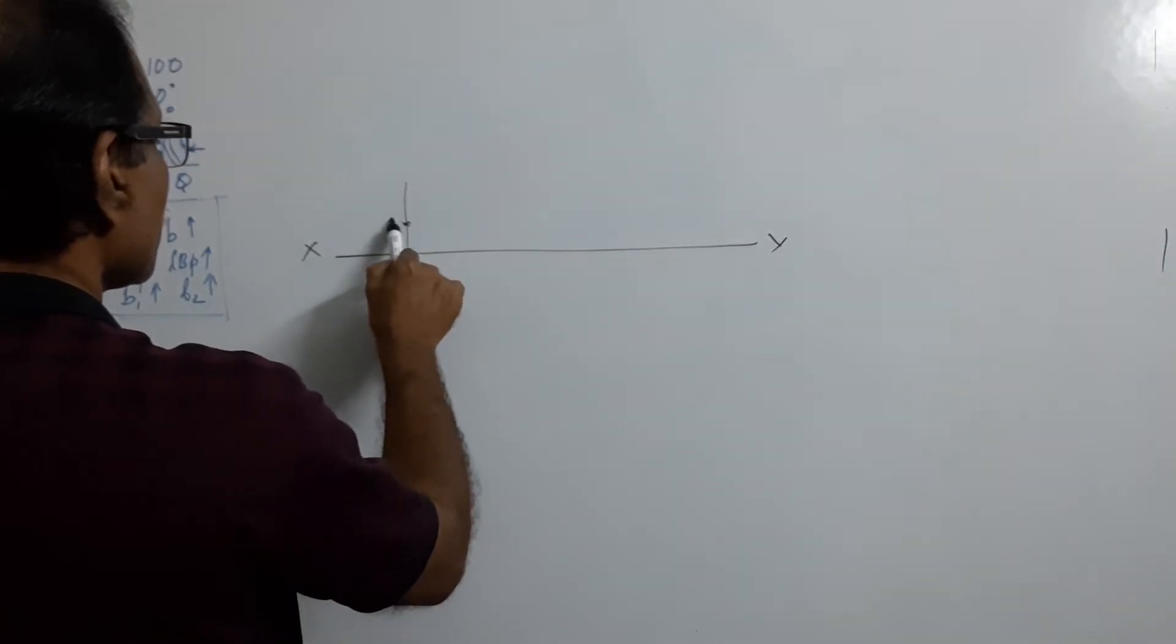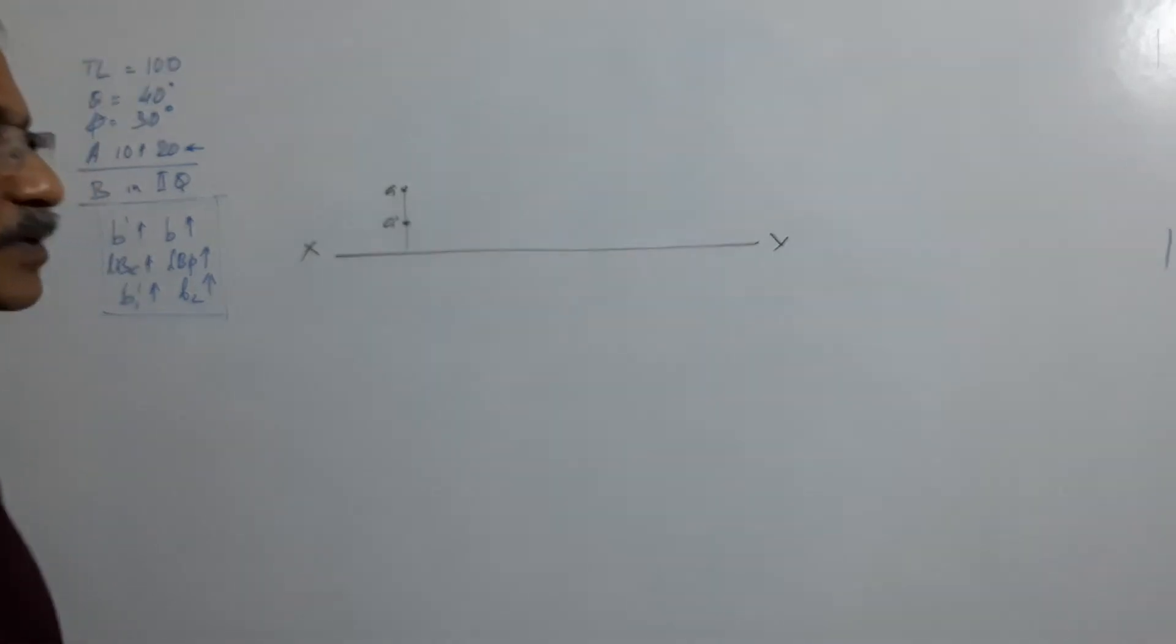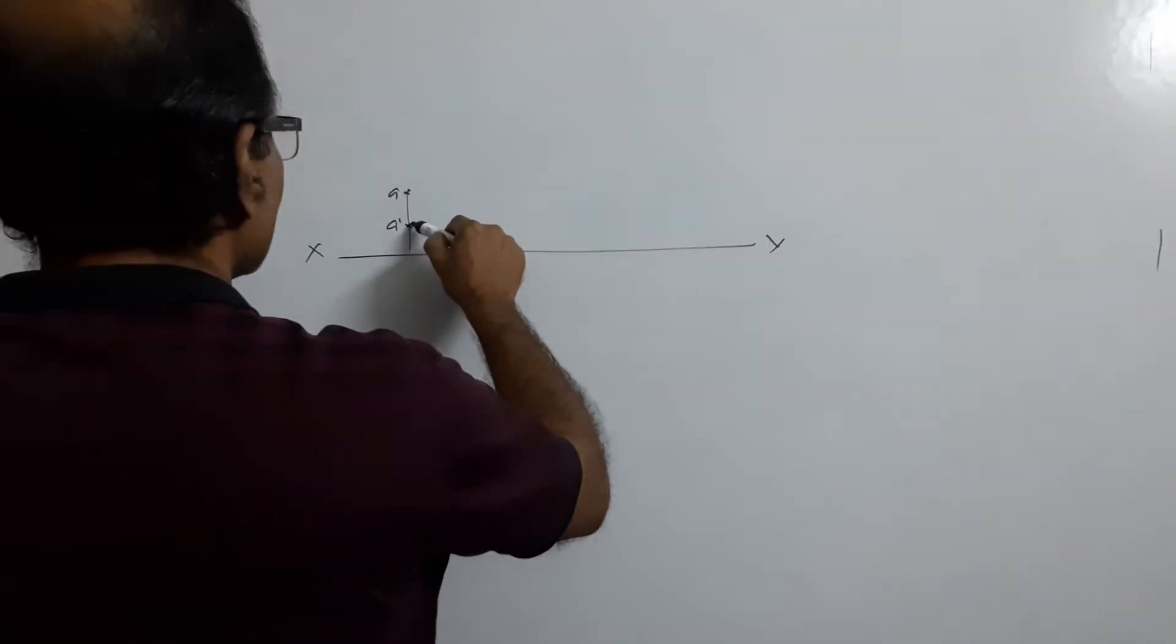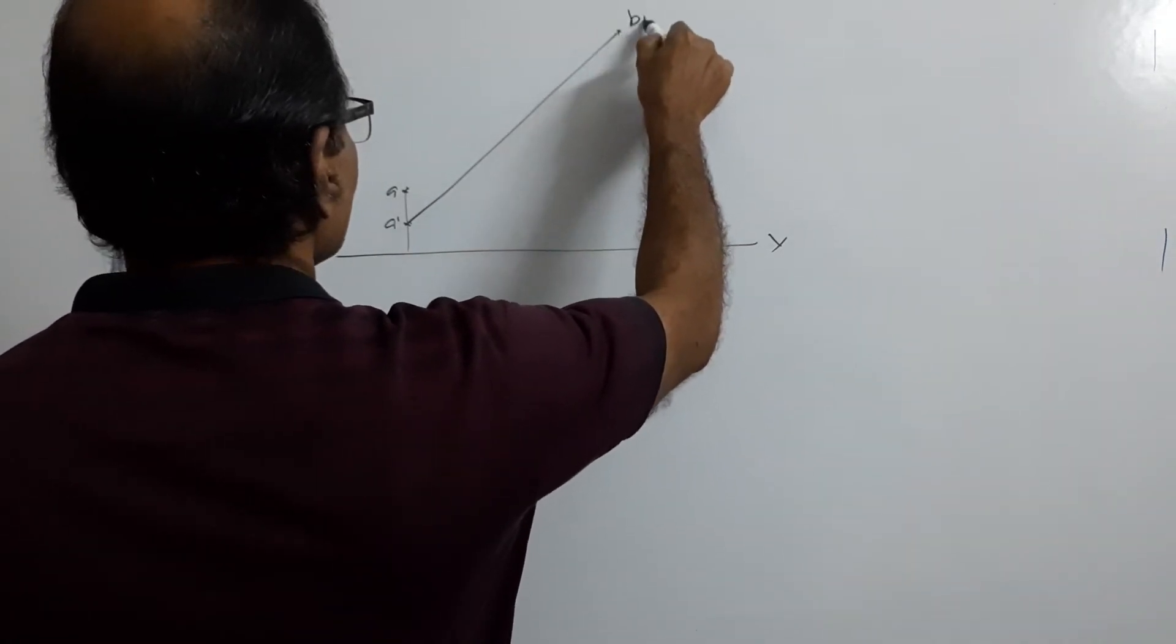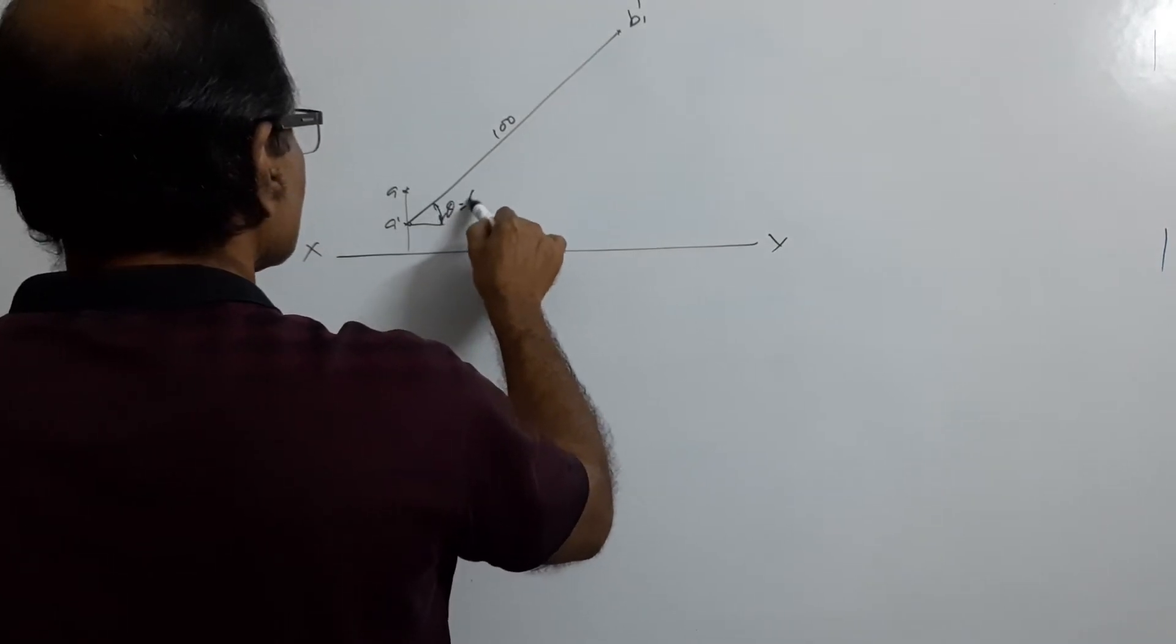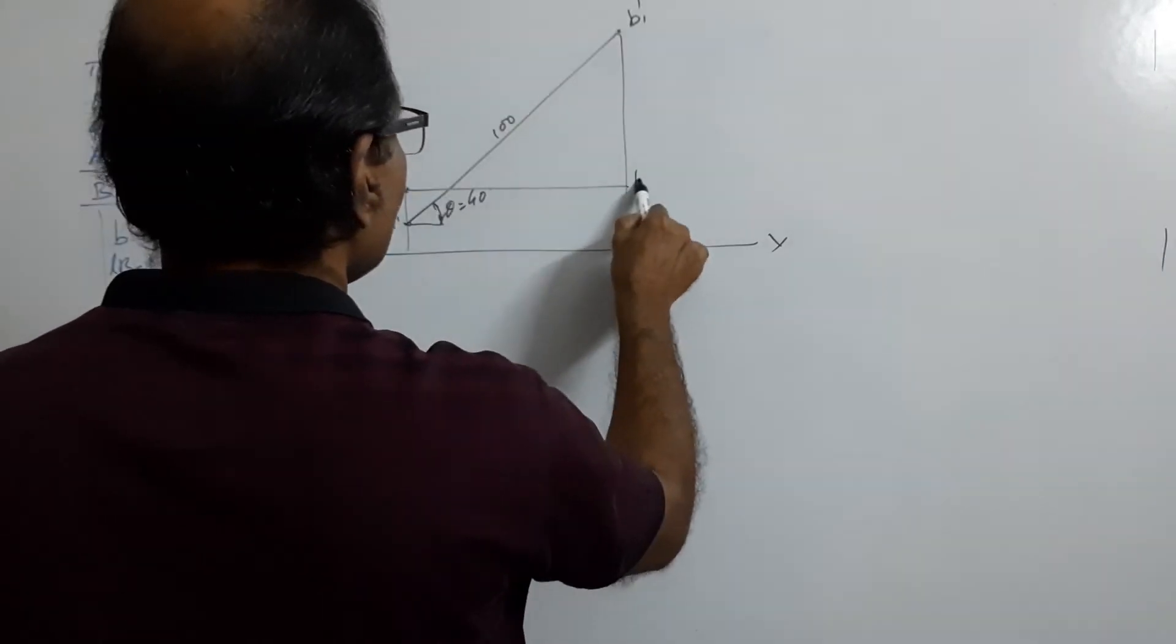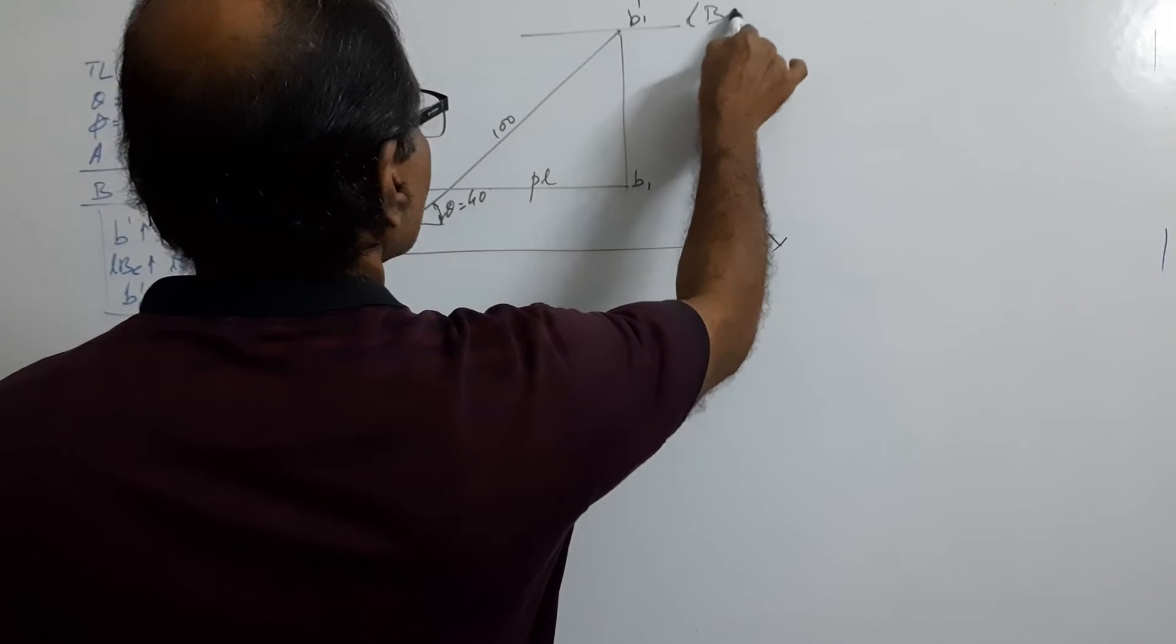Locate A dash A. Assume the line is parallel to VP android elevation 40 degrees. B1 dash 100mm, theta equals 40 degrees. Project the plan AB1, plan length LBE.